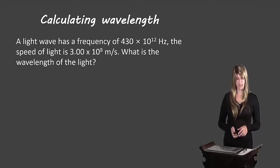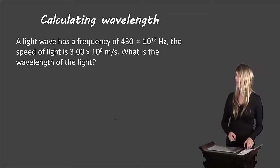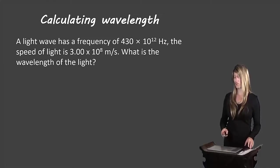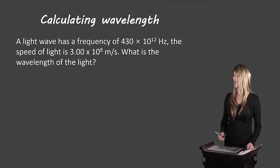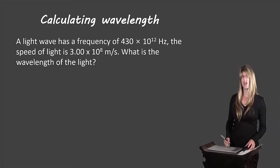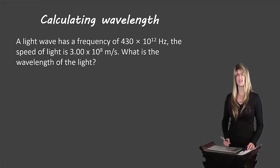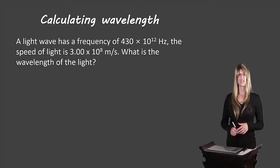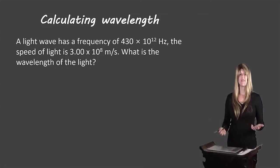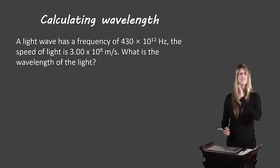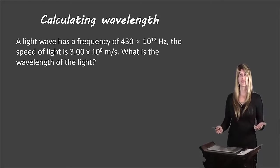Let's take a look at an example. A light wave has a frequency of 430 times 10 to the 12 hertz. The speed of light is 3.00 times 10 to the 8 meters per second. What is the wavelength of light? We're going to use the GRASS method to answer this question. You may have learned the GUESS method in another class — it uses basically the same steps with different letters.